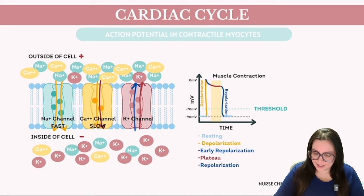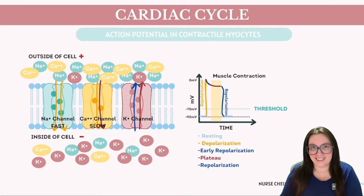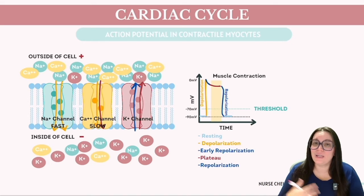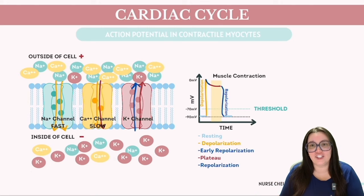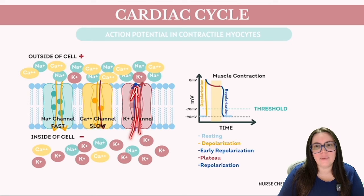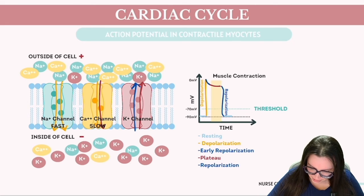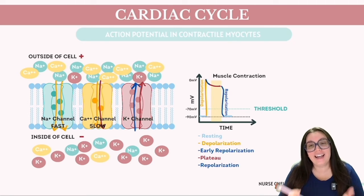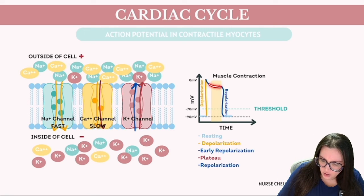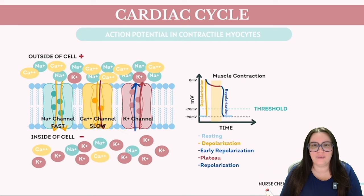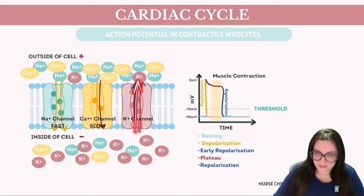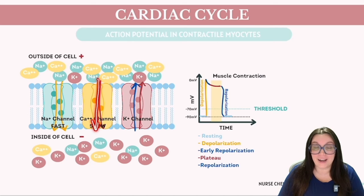L-type calcium channels open at negative 40 millivolts, allowing a gradual and continuous slow entry of calcium. As the action potential reaches its peak, sodium channels swiftly shut off while voltage-gated potassium channels open, allowing potassium to leave the cell and causing a slight drop in membrane potential — a stage referred to as early repolarization. After early repolarization, the action potential enters a plateau phase lasting approximately 200 milliseconds, distinguished in cardiac action potentials and maintained by the efflux of potassium offsetting the influx of calcium.